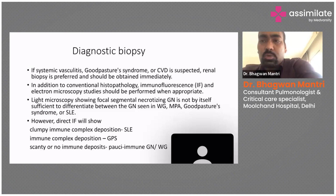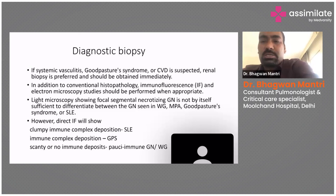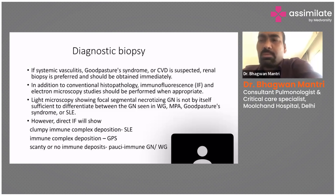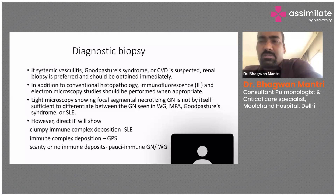If Goodpasture syndrome or systemic vasculitis is suspected, renal biopsy is immediately indicated. Along with conventional histopathology, immunofluorescence and electron microscopy are needed to differentiate between SLE, Goodpasture syndrome, and glomerulonephritis. On immunofluorescence, clumpy deposition favors SLE; immune complex deposition suggests Goodpasture syndrome; and scanty or minimal deposition indicates pauci-immune glomerulonephritis. This helps identify which collagen vascular disease or vasculitis is responsible.